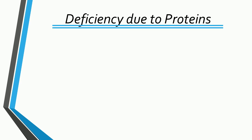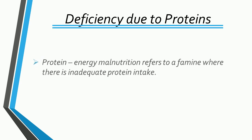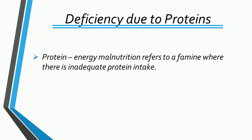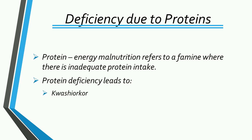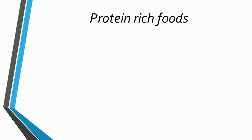Deficiency due to proteins. Protein energy malnutrition refers to a condition where there is inadequate protein intake. Protein deficiency leads to kwashiorkor and marasmus. We can eat protein-rich foods to avoid this.